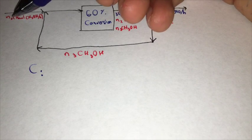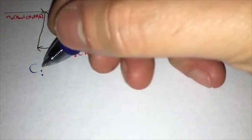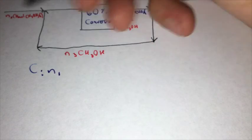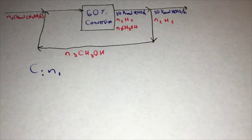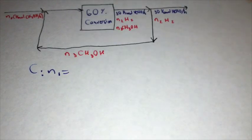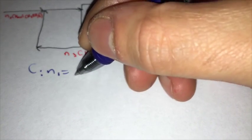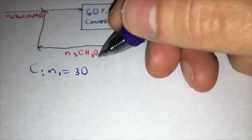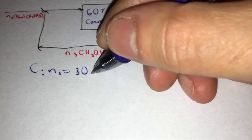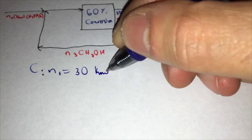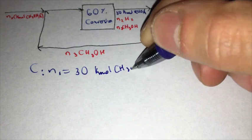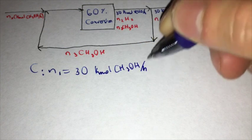N1 going in, which only has one carbon, equal to 30 kmol with one carbon. So N1 is equal to 30. And now we've solved for N1, N1 is equal to 30 kmol of CH3OH per hour.